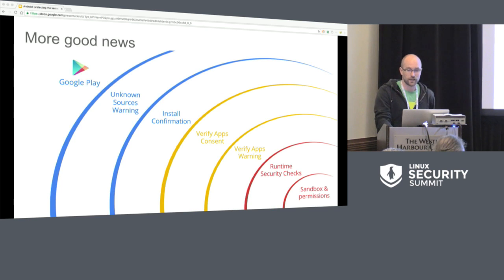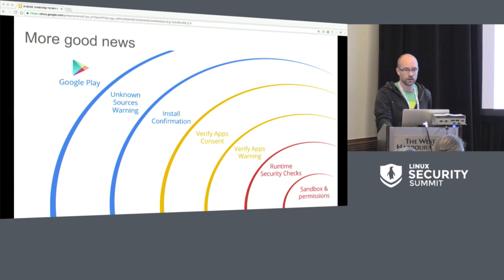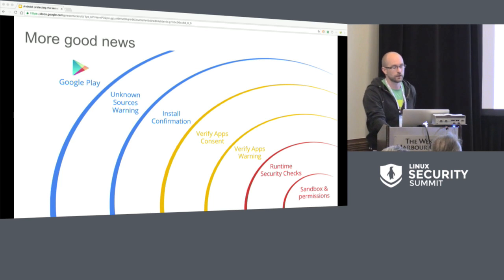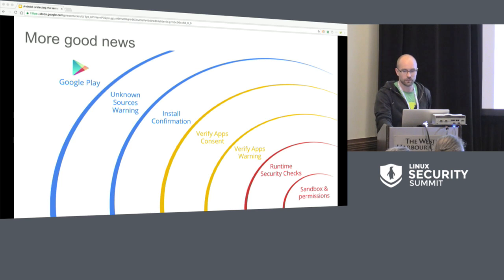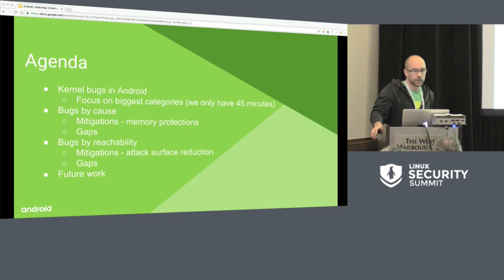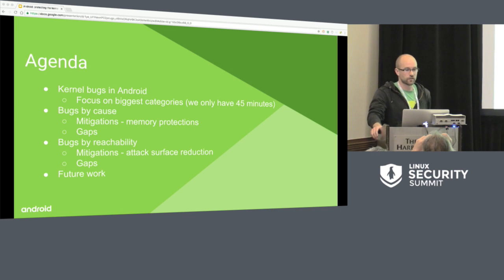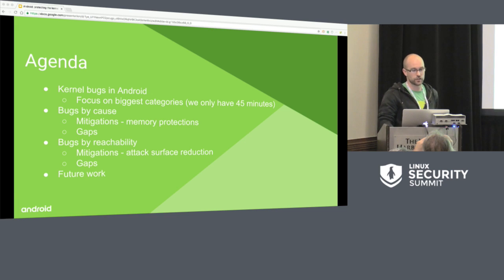The kernel only represents one of many lines of defense, and a lot of the other efforts on Android are focused on preventing malicious code from ever reaching your Android device. For our agenda, we're going to look at kernel bugs and discuss their causes — categorizing them by type — look at reachability of kernel bugs, then discuss mitigations both by cause and reachability, and then gaps and future work.